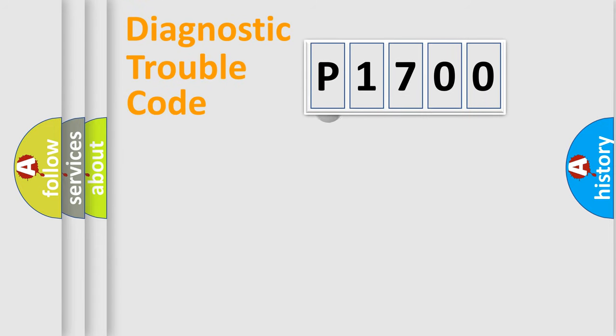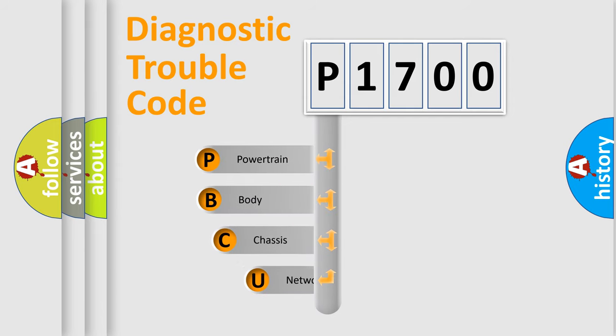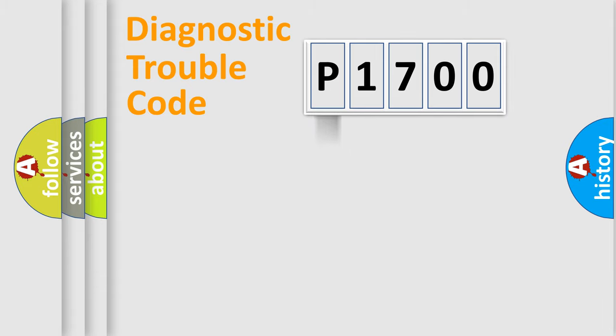First, let's look at the history of diagnostic fault code composition according to the OBD2 protocol, which is unified for all automakers since 2000. We divide the electric system of automobile into four basic units: Powertrain, Body, Chassis, and Network.